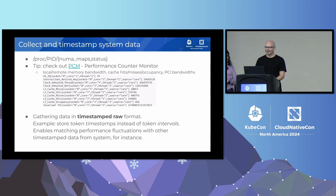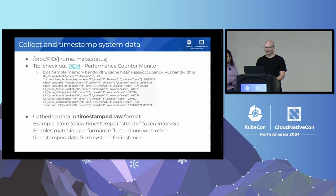For those interested in more hardware counters, I would give a tip to check out the PCM project — that's the Performance Counter Monitor project — because with the tools included in it, which you can find on GitHub, you can get counters like cache misses, cache hits, cache occupancy, instruction counts, and PCI bandwidth and so on. These are quite interesting low-level counters.